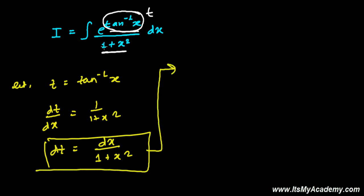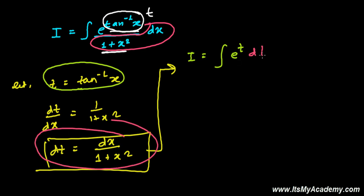Based on this relationship, we can convert now and change the face of this into the new term. Now e to the power tan inverse of x, that is e to the power t because tan inverse of x we supposed as t. And now dx over 1 plus x squared, that is dt. It's simply dt.